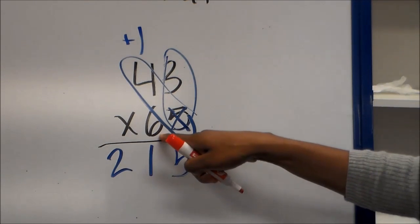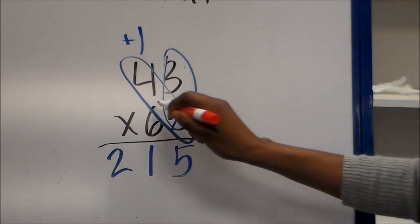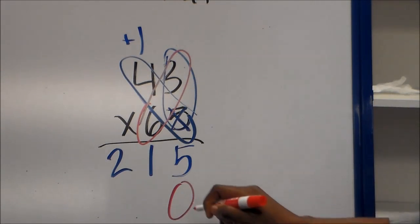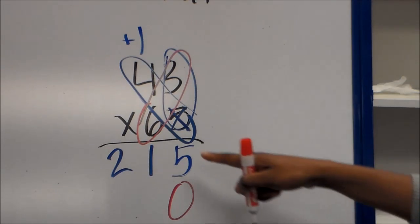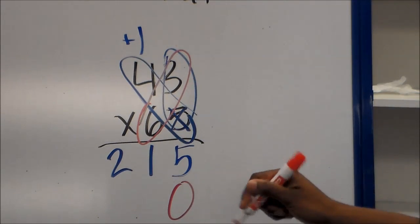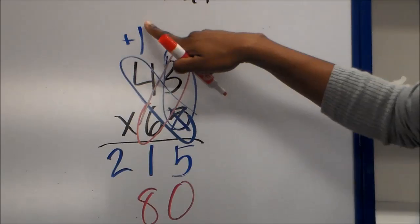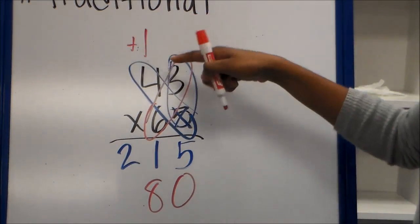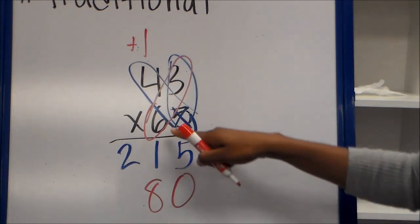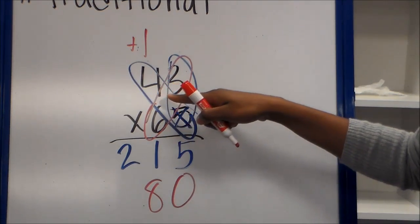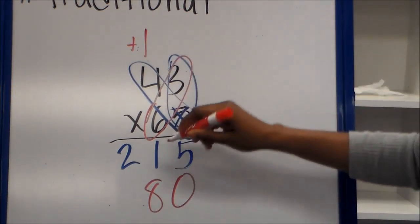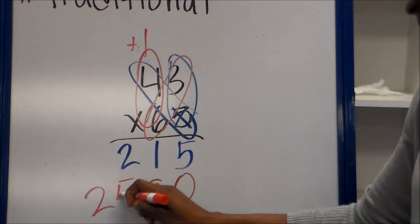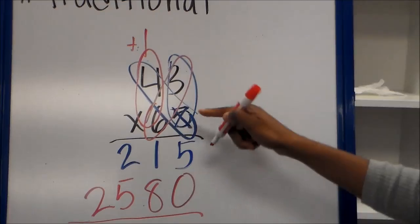So then we're multiplying this 6 by this 3. After we put our placeholder. 6 times 3 is 18. We put the 8 on the bottom and we're no longer using that one. We are adding the one from the 18. Then we have 6 times 4, which is 24. We add that 1, which is 25.